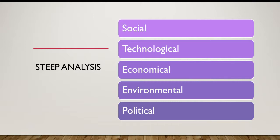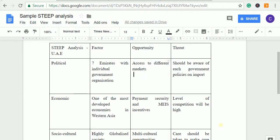This is very important, just like how we did the STEEP analysis for the product. Let me take you to a sample STEEP analysis. Here I've done the STEEP analysis for UAE. For the political factor, UAE has seven Emirates with individual government organizations.